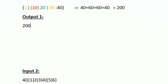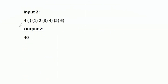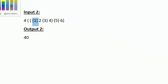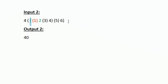Now let us see sample input 2. In this expression, integer 4 is outside the parentheses, so we completely ignore integers outside parentheses. We have three opening parentheses, and whenever there is an opening parenthesis the level increases. Integer 1 is inside three opening parentheses so it is at level 3. After that parenthesis closes, we are at level 2, so integer 2 is at level 2.